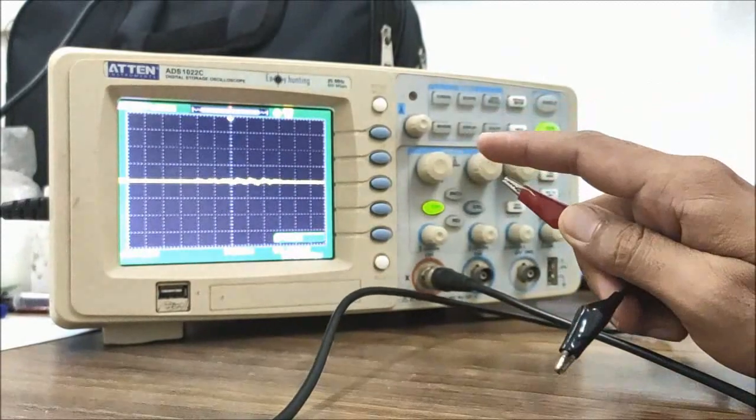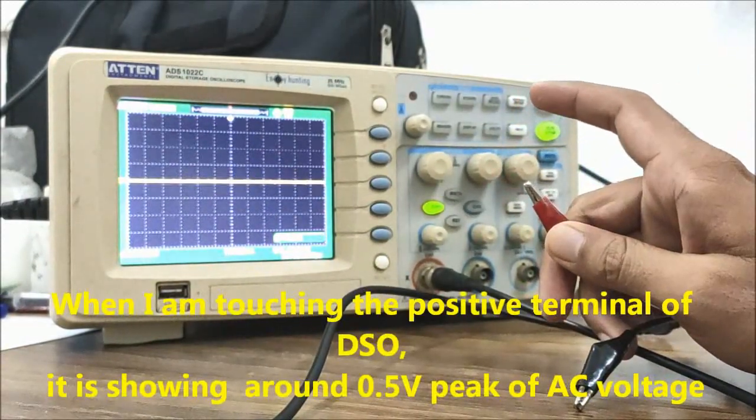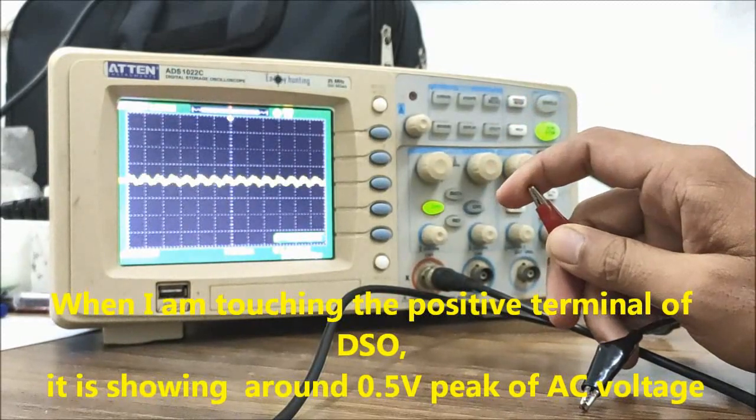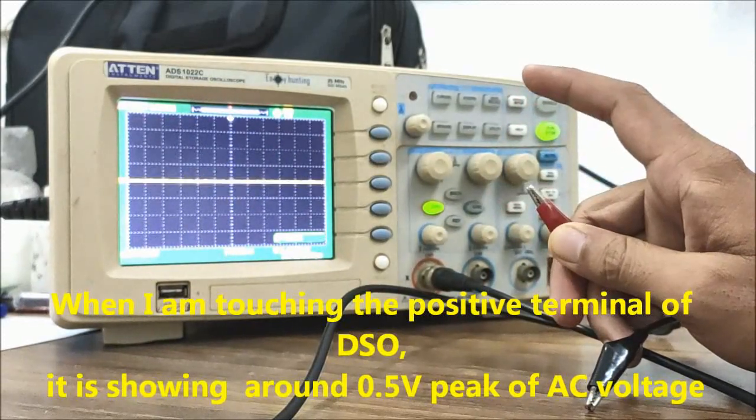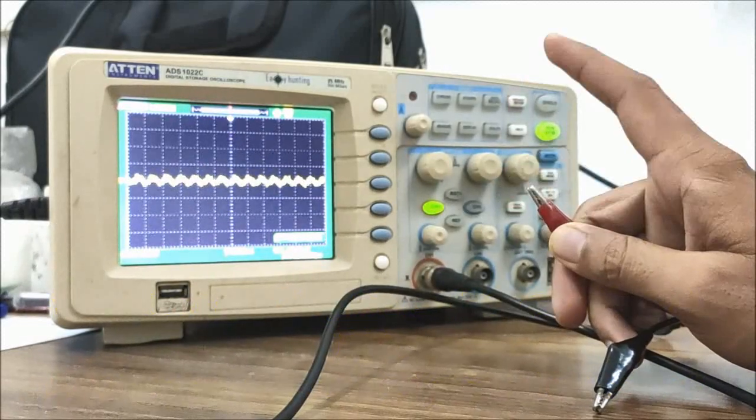When I'm touching the positive terminal of the DSO, that is the digital storage oscilloscope, keeping the negative terminal grounded, it shows around 0.5 volt peak sinusoidal AC voltage.